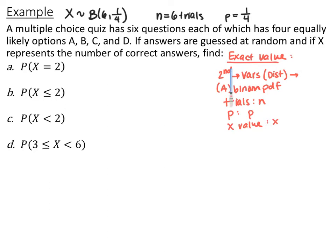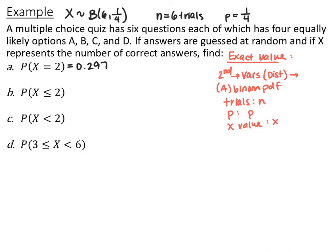In the binomial PDF, trials = 6, P = 1/4, and X = 2. Using your graphing calculator with these steps, the probability that X equals 2 is 0.297. So there's just slightly less than a 30% chance that on a six-question multiple-choice test, you will get exactly two of them right.